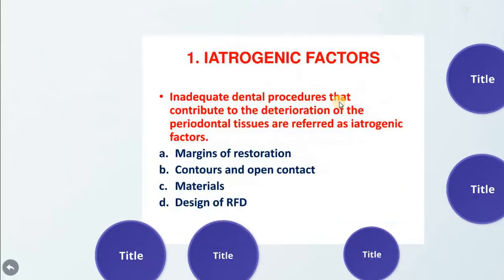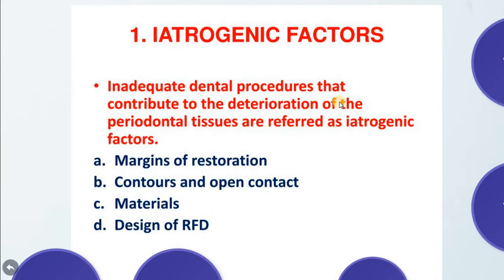Regarding the iatrogenic factors, we have four to five factors. First of all, we should know that deficiencies in the quality of dental restoration or prosthesis are contributing factors to gingival inflammation and periodontal destruction. Inadequate dental procedures that contribute to the deterioration of the periodontal tissue refer to the iatrogenic factors — faults done by the dentist's procedures, done by our hands.